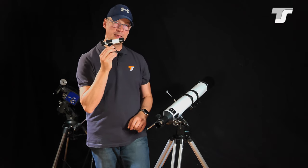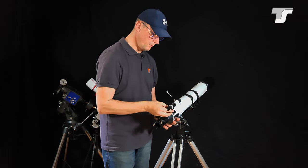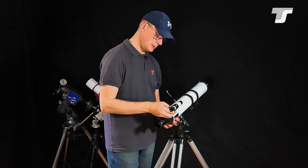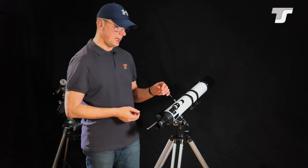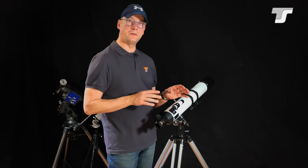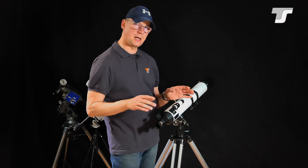This is where we use this little finder scope that is just put on the top here in the finder shoe. And this little telescope has a much lower magnification, something around four to six times, and it has a crosshair in it.